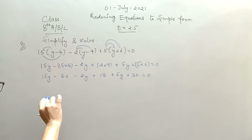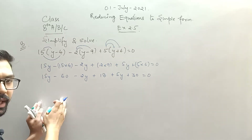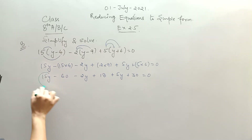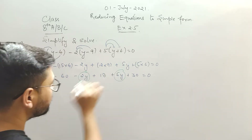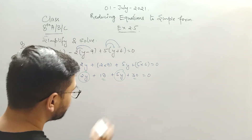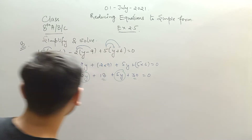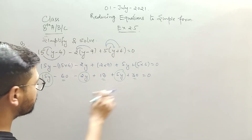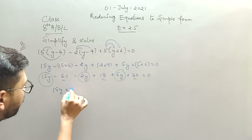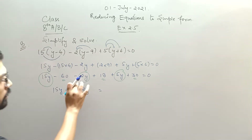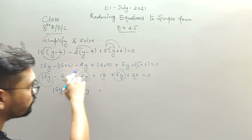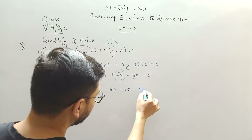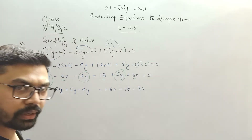Now club the variable terms on one side and the constant terms on the other side. The variable terms are: 15y, 5y, and minus 2y. The constant terms are minus 60, plus 16, minus 18, and minus 30 — move them to the RHS with opposite sign. So 15y plus 5y minus 2y on the LHS. 15 plus 5 is 20, minus 2 gives 18y.